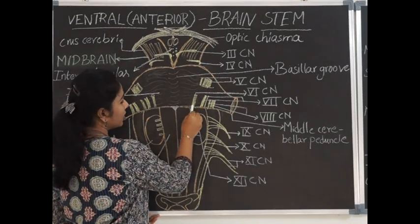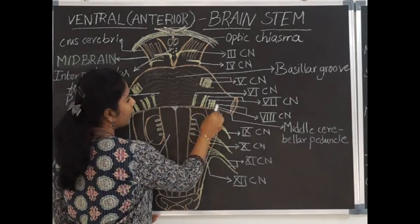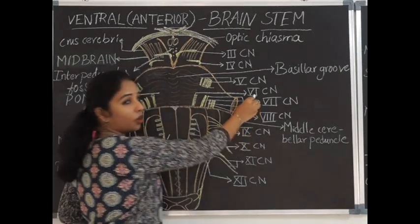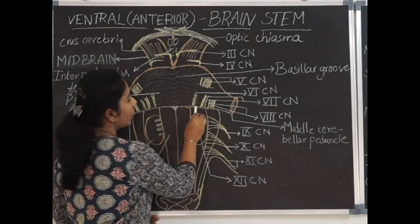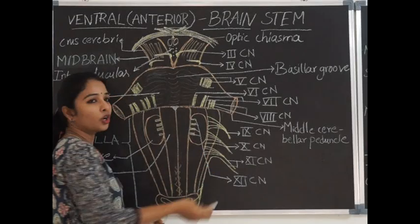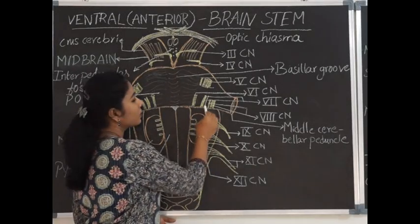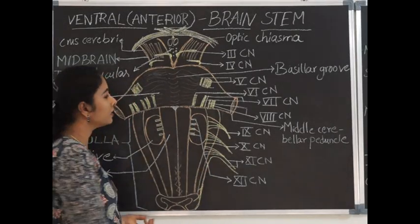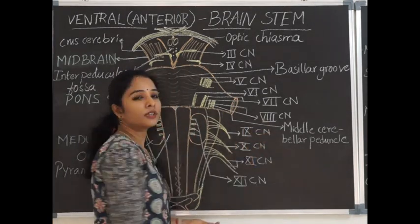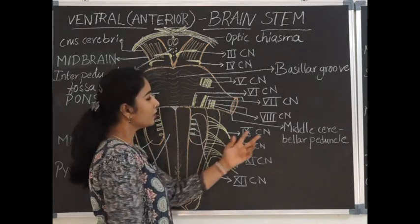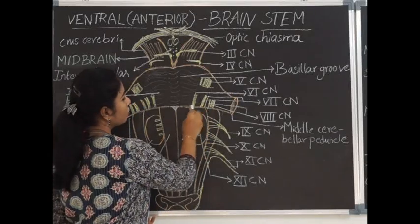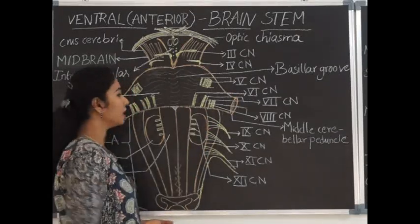From the pontomedullary junction, from medial to lateral, the nerves getting origin are: the 6th cranial nerve, which is the abducent nerve; lateral to the 6th, the 7th cranial nerve, which is the facial nerve — which has two roots, a motor root and a sensory root called the nervus intermedius; and the lateral-most nerve is the 8th cranial nerve, the vestibulocochlear, which has two parts — vestibular and cochlear. So three nerves get origin from the pontomedullary junction.